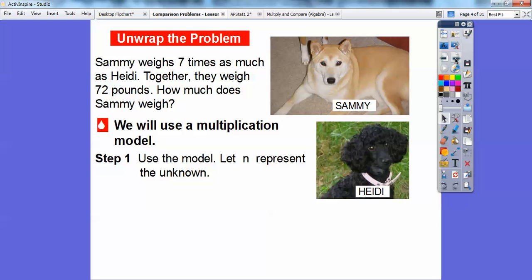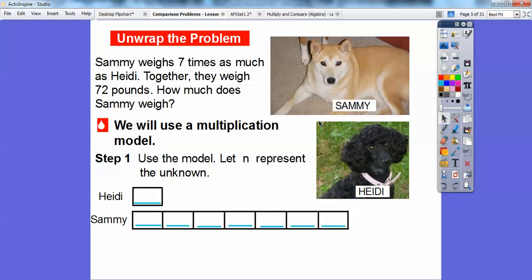We're going to use a multiplication model. This goes pretty fast. We're going to use the model that n represents the unknown number. Since we don't know how much Heidi or Sammy weighs, we're just going to let it be n. So I'll put n in here for Heidi, and Sammy is seven times that. So there's seven boxes here, so each one of these boxes is going to get an n inside of there.